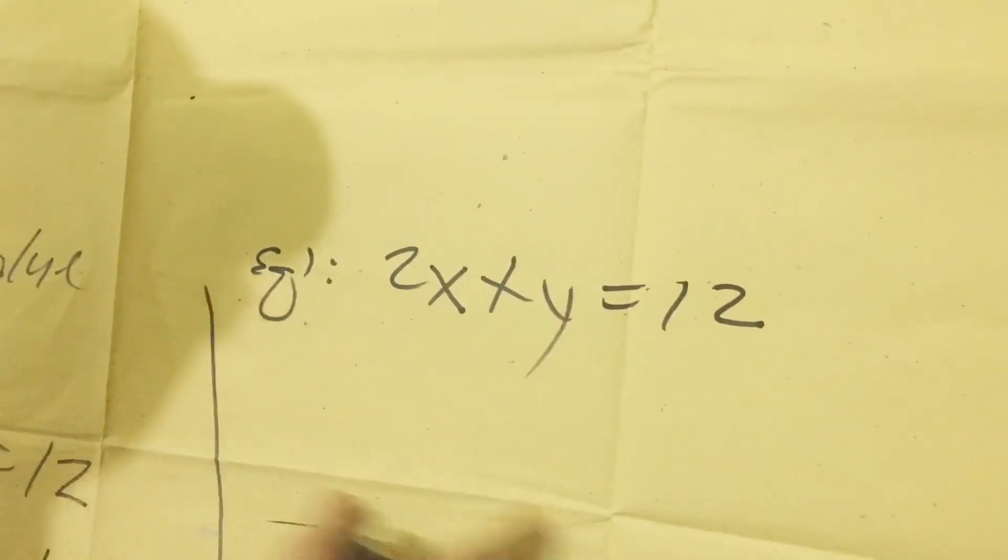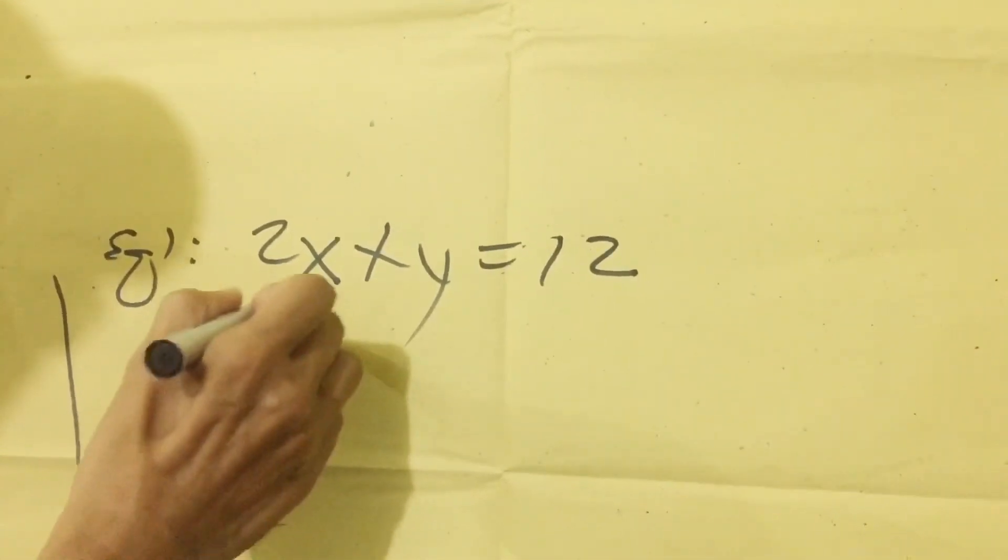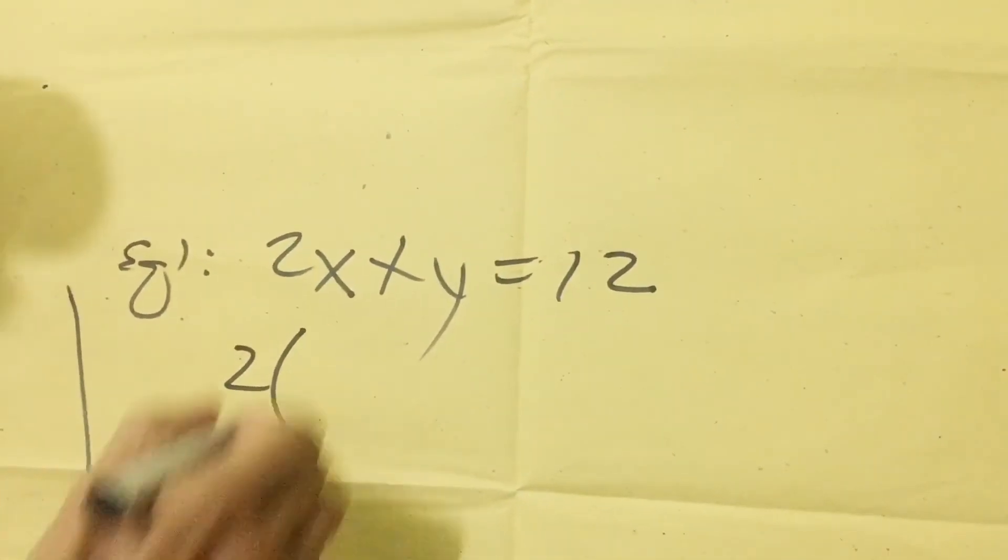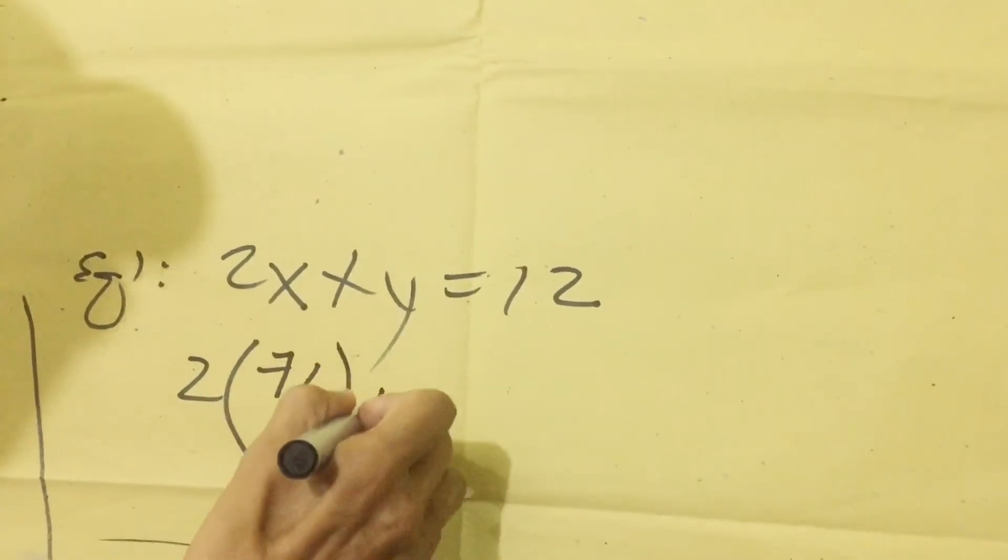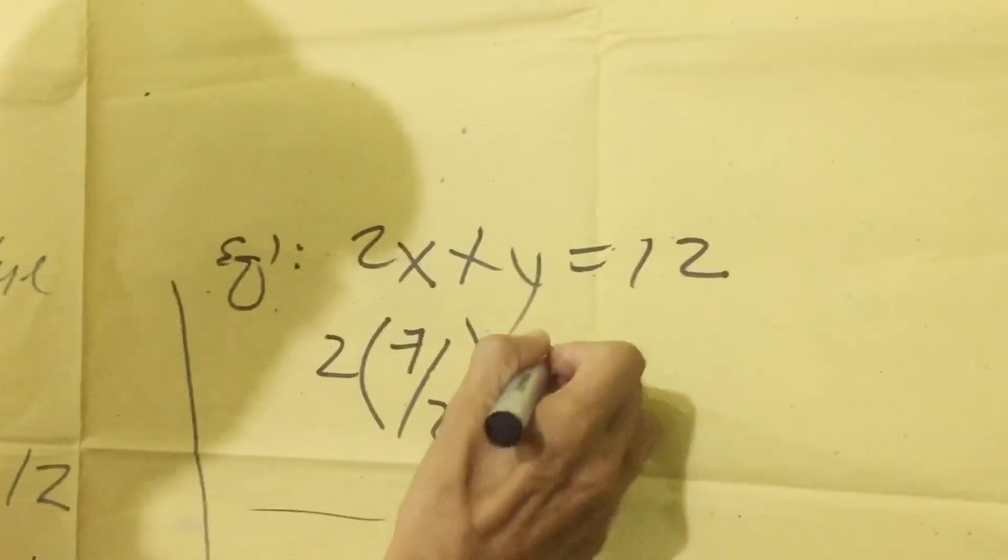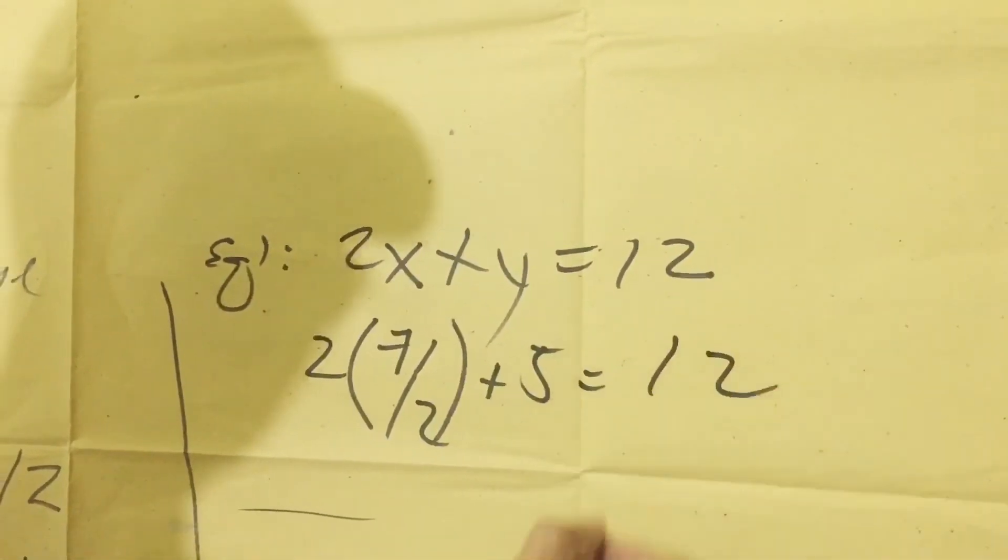We use equation 1. And then the value of x is, here is 7 over 2. Plus what's the value of y? We have 5.